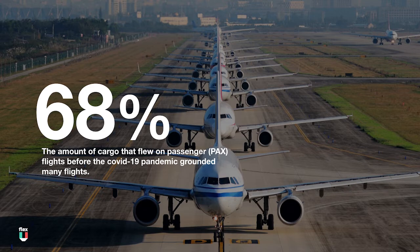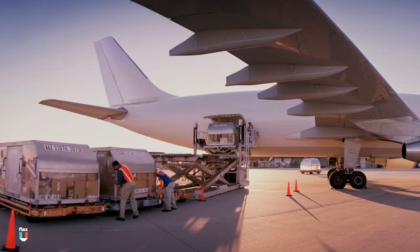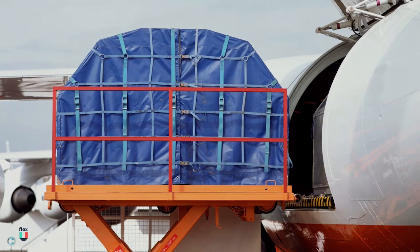In each of these aircrafts there are positions to place cargo Unit Load Devices, or ULDs for short. These ULDs have irregular shapes that are meant to embrace the shape of the aircraft and maximize the usage of space for each of the positions available to load.